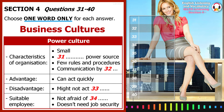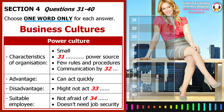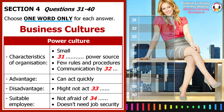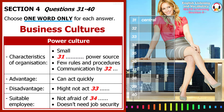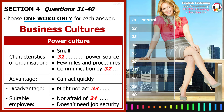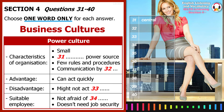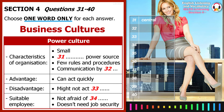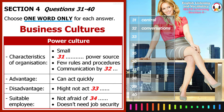The first type is called the power culture, and it's usually found in small organizations. It's the type of culture that needs a central source of power to be effective. And because control is in the hands of just one or two people, there aren't many rules or procedures. Another characteristic is that communication usually takes the form of conversations rather than formal meetings or written memos.